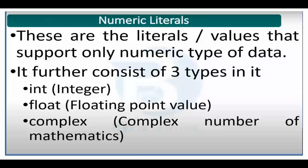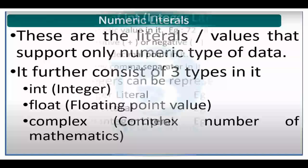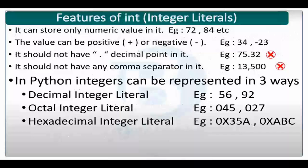The next types of literals in Python are numeric literals - literals which support numerical type of data. In Python we can store three types of numeric data: integers (whole numbers), float (decimal numbers with a decimal point), and complex numbers. Since complex numbers are typically a science topic for class 11, we will consider only integer and float in this portion.